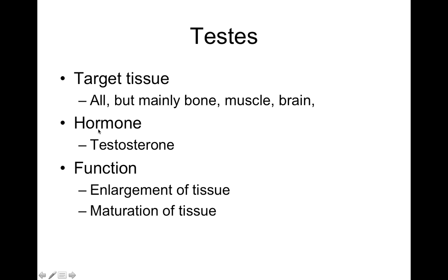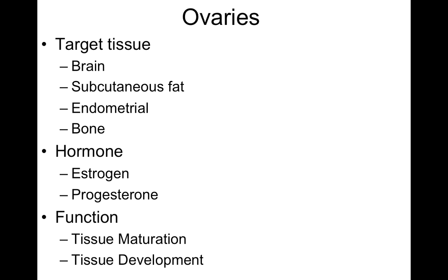The testes target everything but mainly bone, muscle, and brain, releasing testosterone, which causes enlargement and maturation of tissues. The ovaries target the brain, subcutaneous fat, endometrial lining of the uterus, and bone, releasing estrogen and progesterone — same as testosterone, these cause tissue maturation and development.